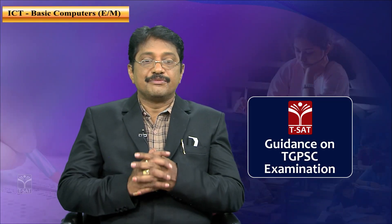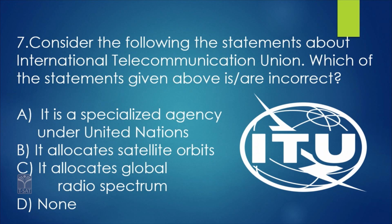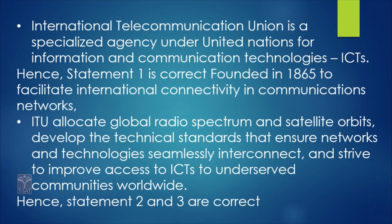Finally, a question: 'Which of the following statements about the International Telecommunication Union is correct?' The options are: it is a specialized agency under United Nations; it allocates satellite orbits; it allocates global radio spectrum; none. International Telecommunication Union (ITU) is a specialized agency under the United Nations for Information Communication Technologies. Hence statement one is correct. It was founded in 1865 to facilitate international connectivity in communication networks. ITU allocates global radio spectrum and satellite orbits, develops technical standards for networks and technologies, and strives to improve access to ICTs for underserved communities worldwide. Statements 2 and 3 are also correct.